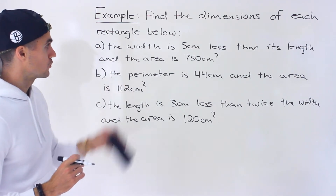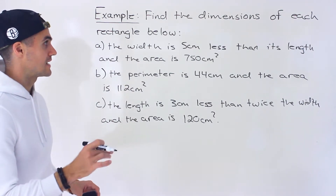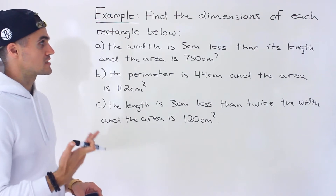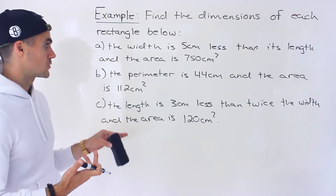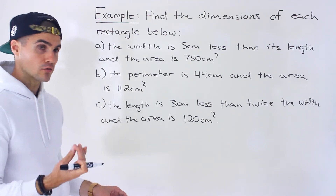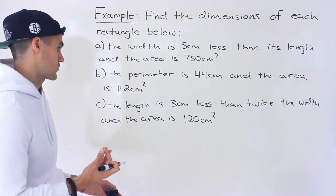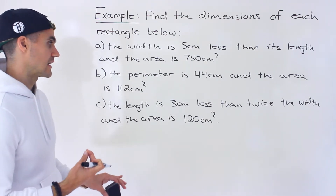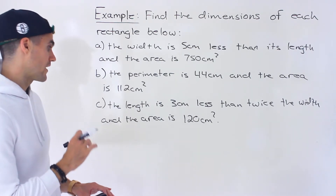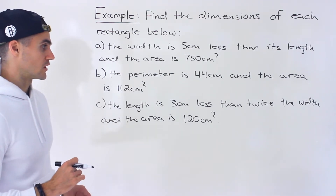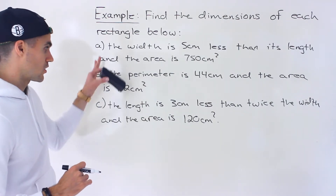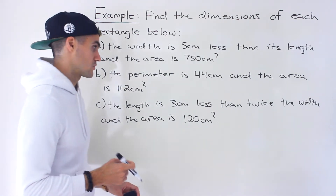In part A, we're told the width is five centimeters less than the length and that the area is 750 centimeters squared. In part B, we're told the perimeter is 44 centimeters and the area is 112 centimeters squared. In part C, the length is three centimeters less than twice the width and the area is 120 centimeters squared. So these are all different rectangles.